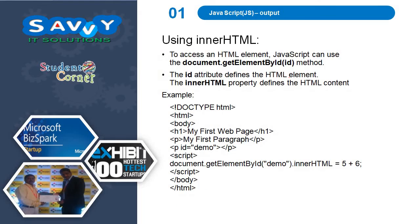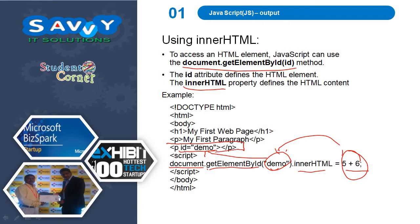Using innerHTML to access an HTML element: JavaScript can use the document.getElementById method. The id attribute defines the HTML element, and the innerHTML property defines the HTML content. Here the paragraph tag has id equal to 'demo', so document.getElementById('demo').innerHTML is equal to 5.6. Automatically the value is stored in demo and the output is shown in that block. The id name must be matched including case sensitivity.